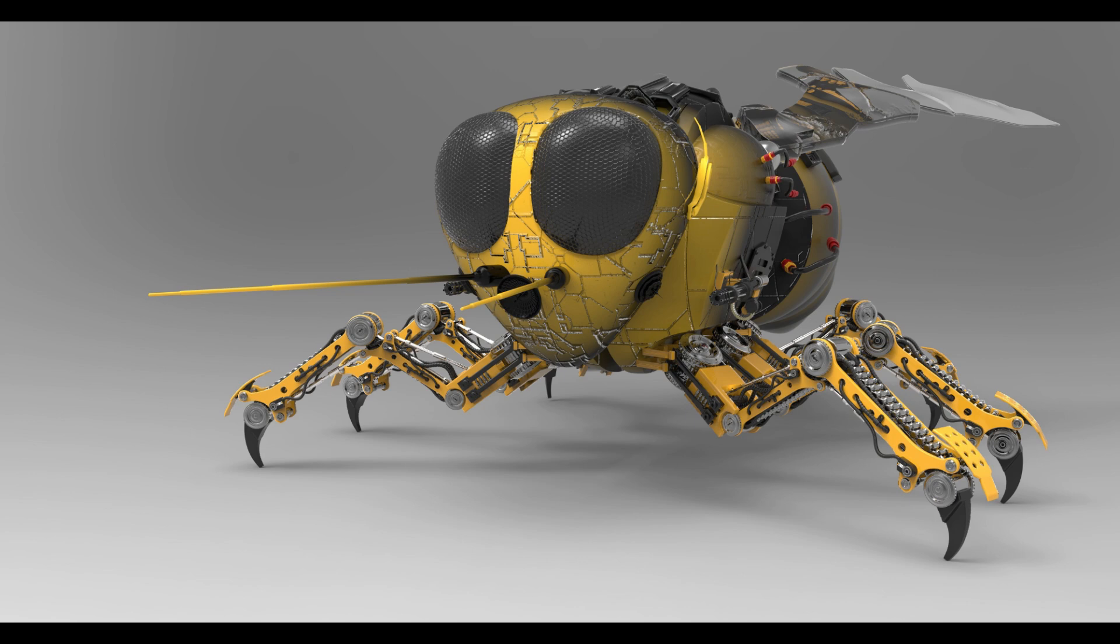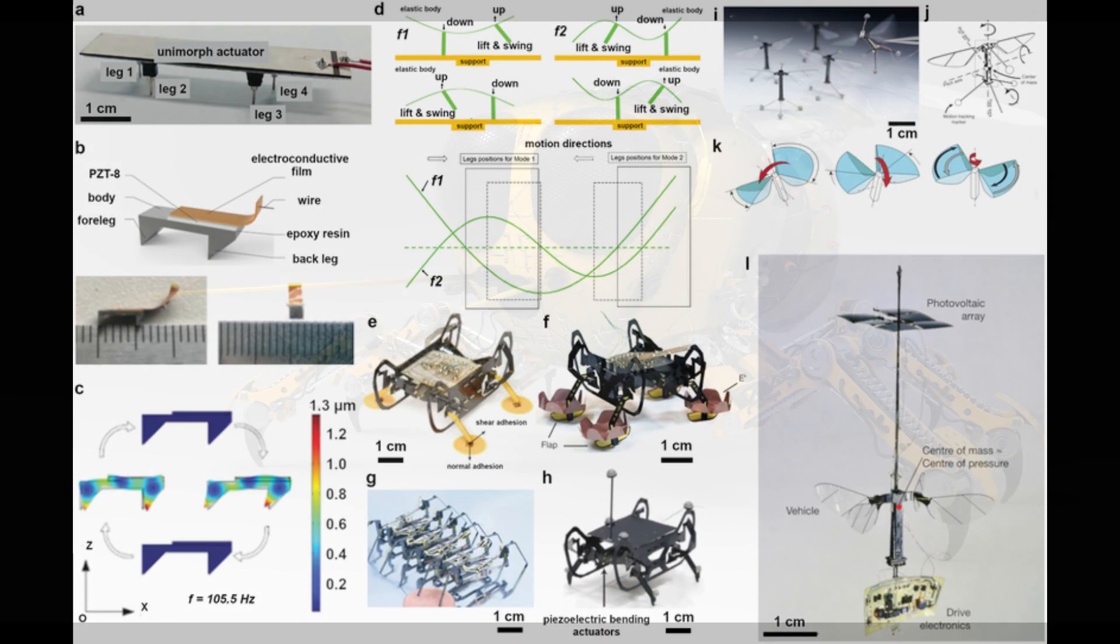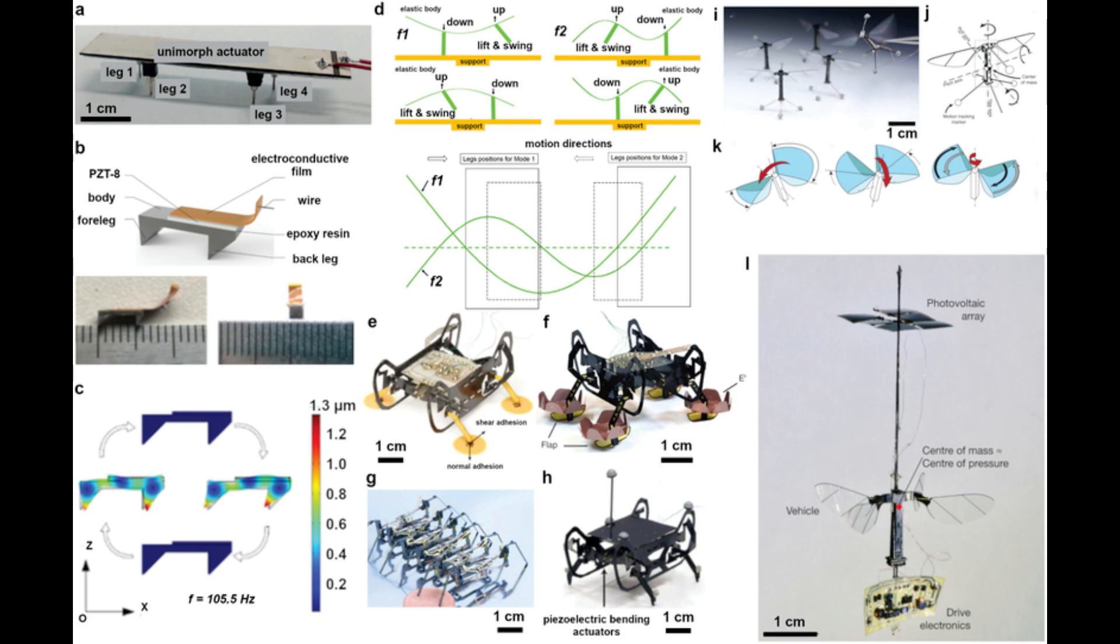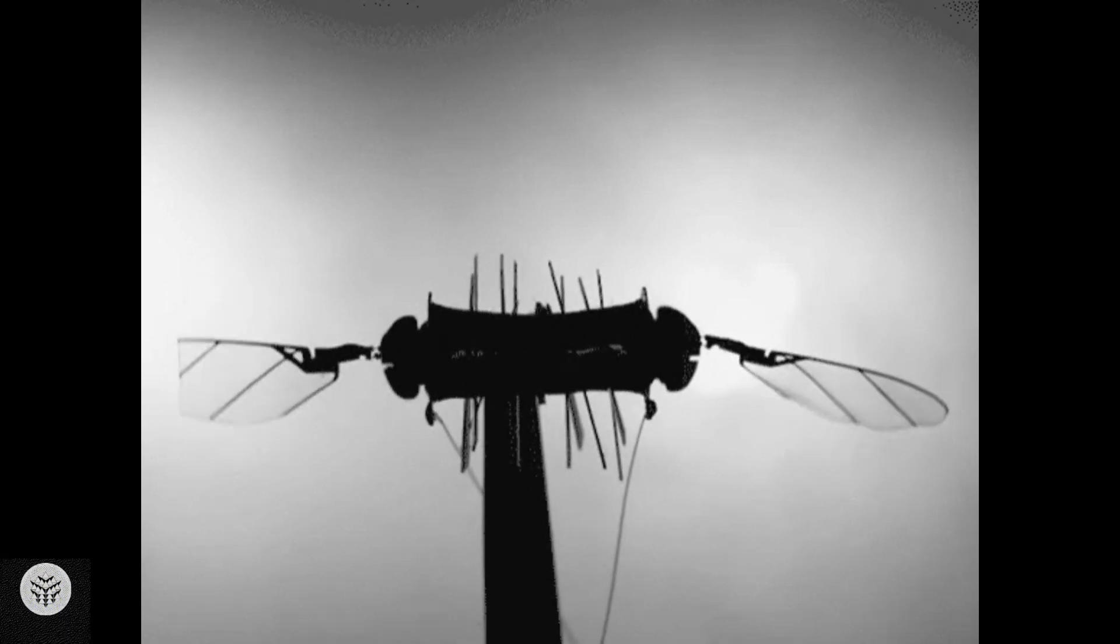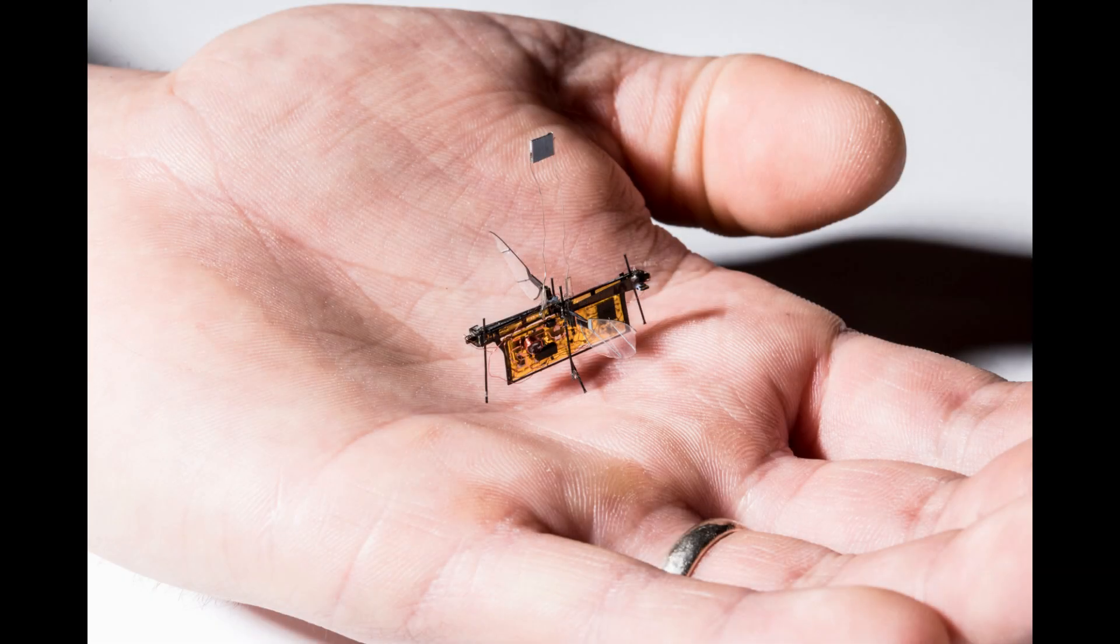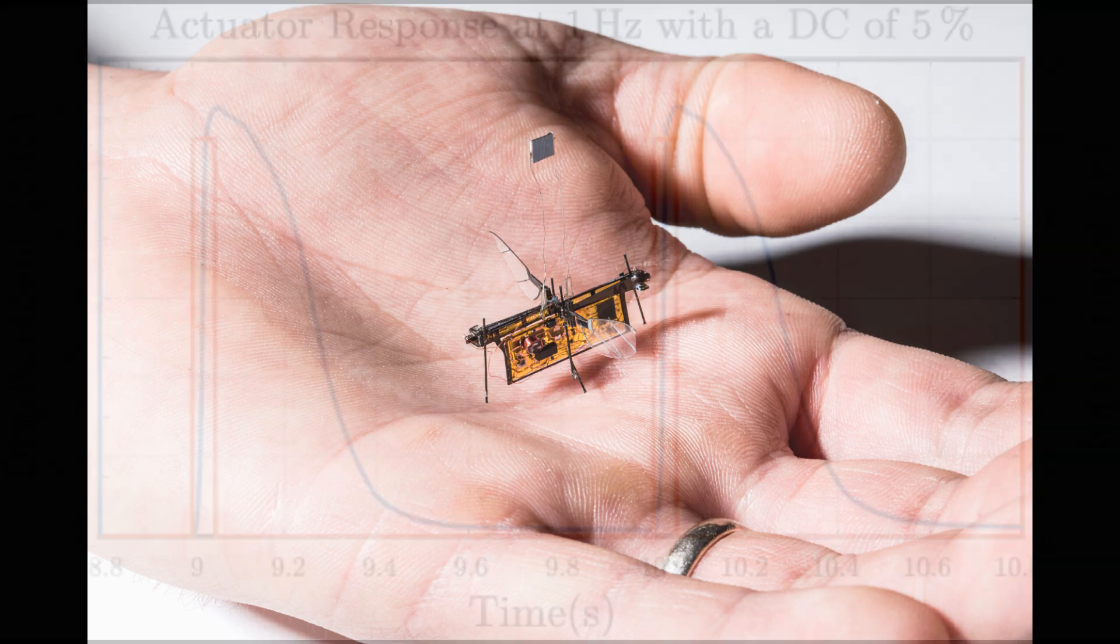By applying a small electrical current, these wires can be swiftly heated and cooled, enabling the robots to rapidly flap their fins or move their feet up to 40 times per second. Remarkably, during initial trials, the actuator demonstrated its impressive strength by effortlessly lifting over 150 times its own weight.